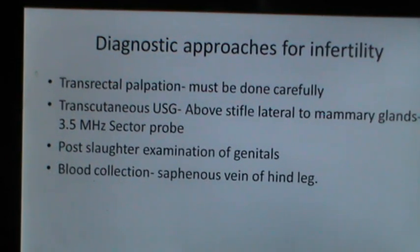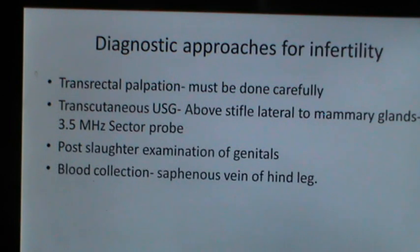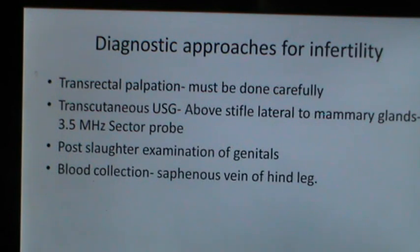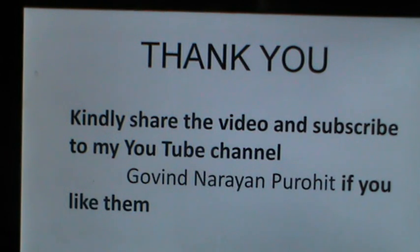Diagnostic approaches for infertility in pig herds include transrectal palpation, which can be done in a small number of breeds and must be done carefully. Transcutaneous ultrasonography above the stifle, lateral to the mammary glands, using a 3.5 MHz sector probe can give insights on the functioning of the uterus and ovaries. A common approach is post-slaughter examination of genitals from sows or gilts. Blood collection can be done using the saphenous vein of the hind legs.